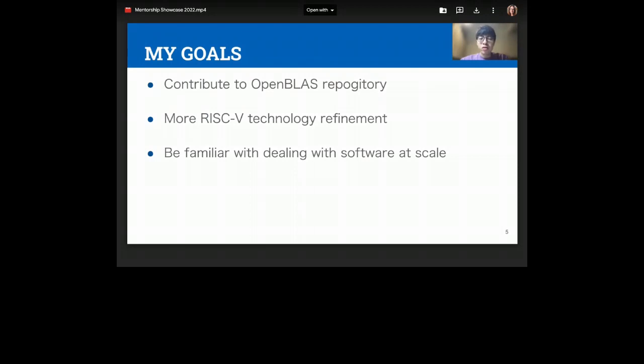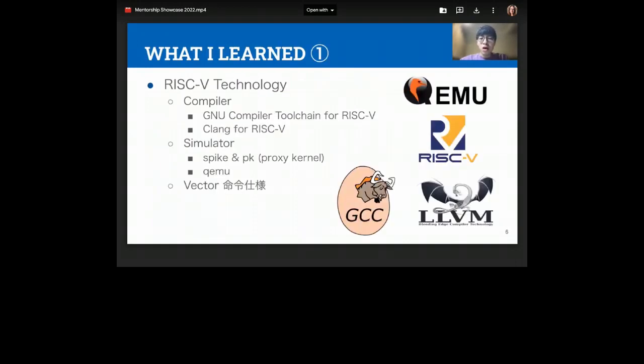From now, I will talk about what I learned through this mentorship. First of all, it gave me a better understanding of RISC-V technology. My PC is equipped with a processor for x86, so I needed to prepare a compiler for RISC-V in order to cross-compile. I used Clang and GCC, each of which has subtle differences, and I used them for interpreting RISC-V assembly code. I do not have an actual RISC-V machine, so performance measurement had to be done by simulation. So I used simulator software such as Spike and QEMU.